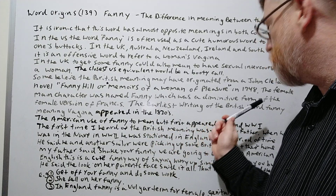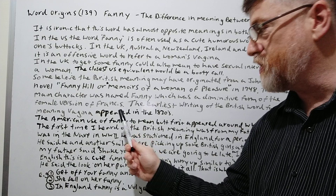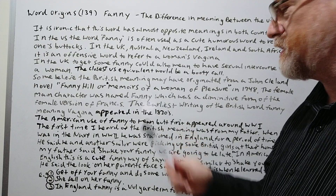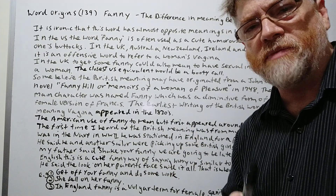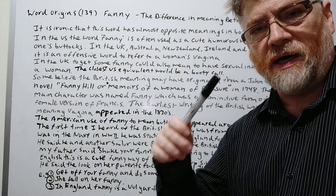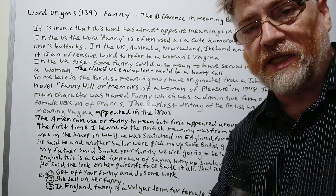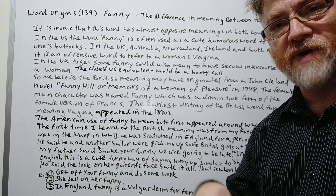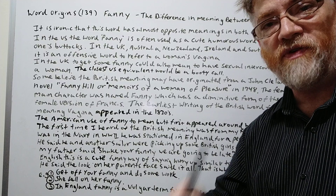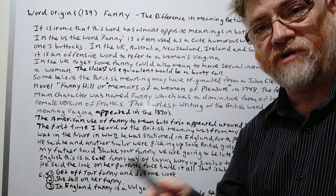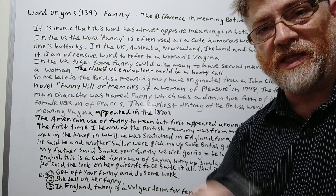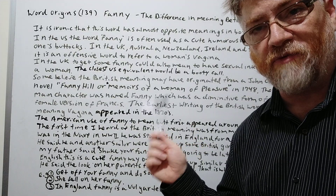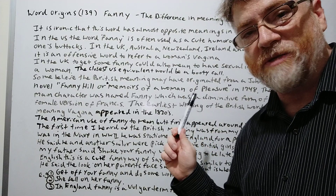The earliest written use of the British word 'fanny' meaning vagina appeared in the 1830s — about 50 to 60 years after the novel. Sometimes it happens that way; some Shakespeare expressions didn't work their way into the language until 50, 100, or even several hundred years later because people read them and then started using them. So it's possible the word came from that novel, which is considered the best possibility.